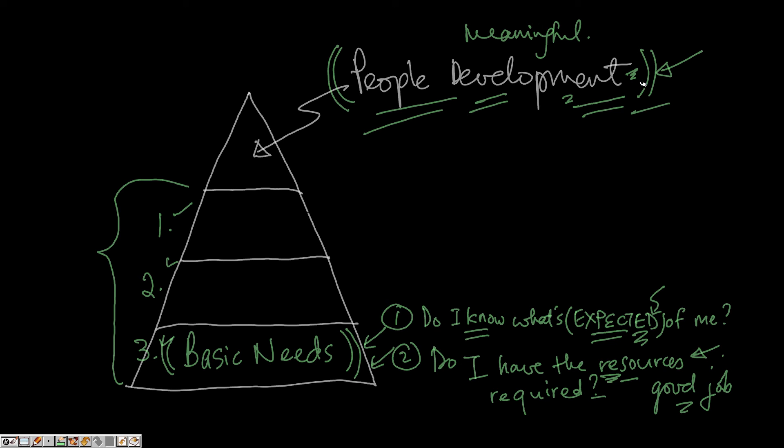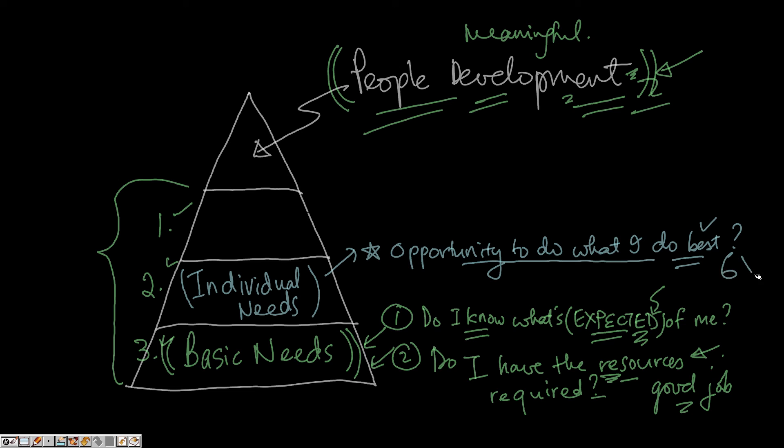Beyond basic needs, every employee also has individual needs. For example, do I have the opportunity to do what I do best every day? According to Gallup, if an employee has an opportunity to do what he or she does best every day, he or she is six times more engaged. So if we don't provide an opportunity for employees to focus on their talent and strengths, people development is just mere rhetoric.